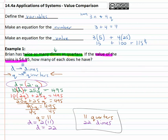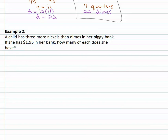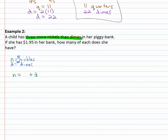Let's try another example. A child has three more nickels than dimes in her piggy bank, and she has one ninety-five in the bank. How many of each does she have? We're working with nickels and dimes, so we'll use N to represent the nickels and D to represent the dimes — specifically the number of nickels and the number of dimes. We're told she has three more nickels than dimes, so there are more nickels. Nickels equals dimes plus three: N equals D plus three.